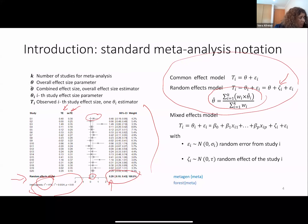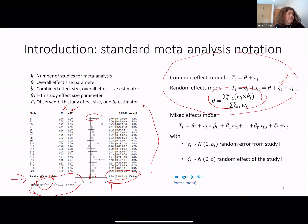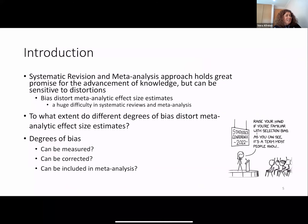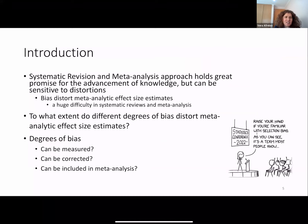The diamond represents the confidence interval, and the confidence interval doesn't include zero, so the effect size is significant. Systematic review and meta-analysis hold great promise for the advancement of knowledge, but can be sensitive to bias. Bias distorts meta-analytic effect size estimates, and it is a huge difficulty. To what extent do different degrees of bias distort meta-analytic effect size estimates?